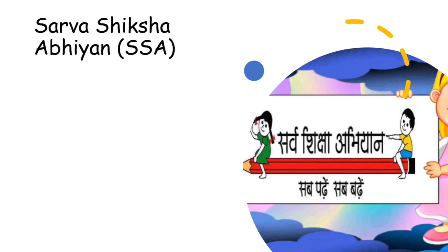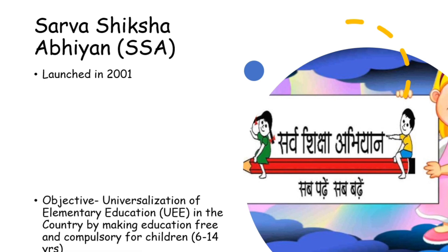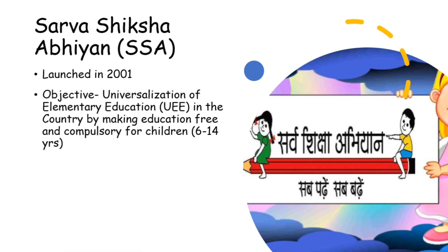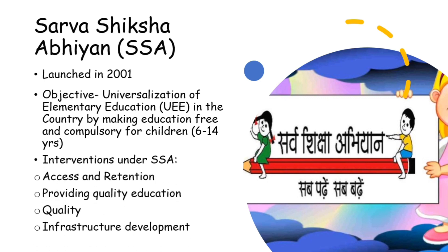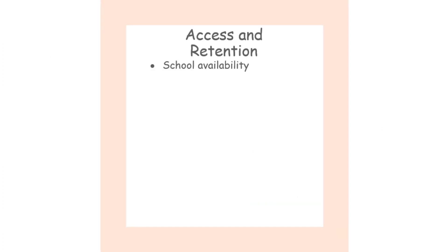Sarva Shiksha Abhiyan: the scheme was launched in 2001. Its objective was to achieve universalization of elementary education in the country by making education free and compulsory for children of the 6 to 14 years age group. Interventions taken to meet this objective are broadly divided into four major categories: access and retention, providing quality education, equality, and infrastructure development.